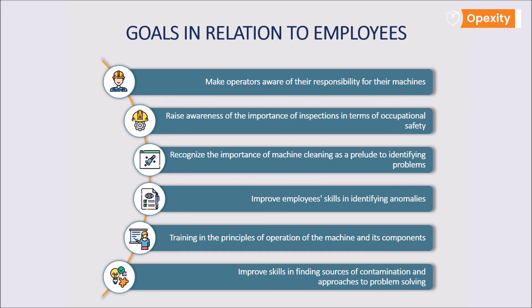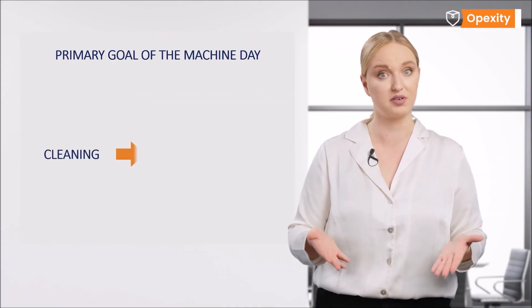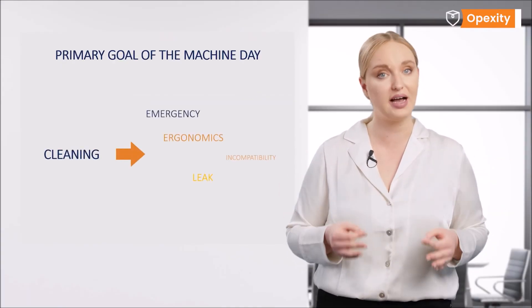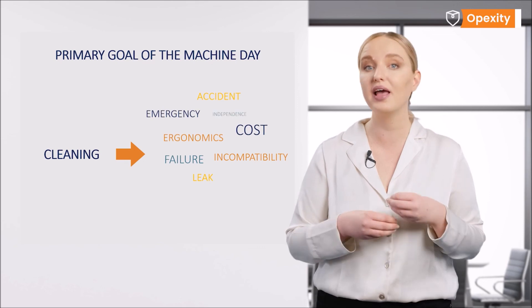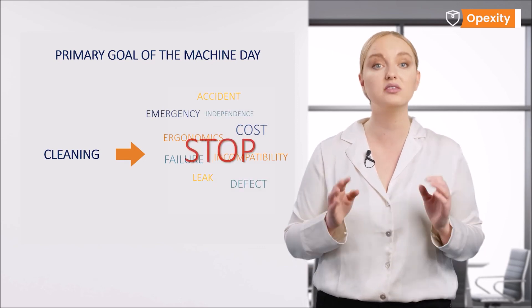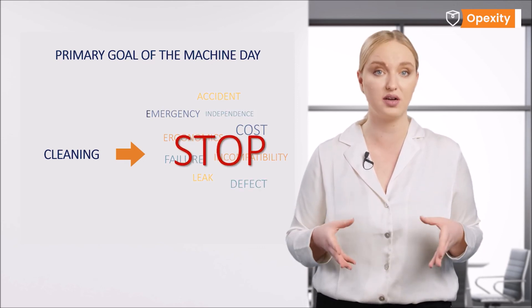The next three points relate to improving skills in the operation itself, as well as identifying problems and their sources. During cleaning, employees often have their first contact with the inside of a machine — this is an opportunity to get to know the machine from a different perspective. To summarize the first part of our lesson: the main task of general cleaning is to remove any machine malfunctions and stop the machine degradation process.